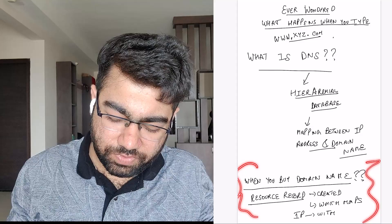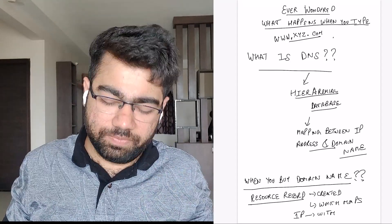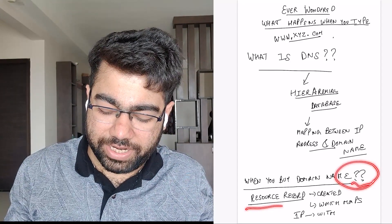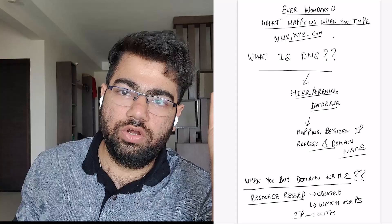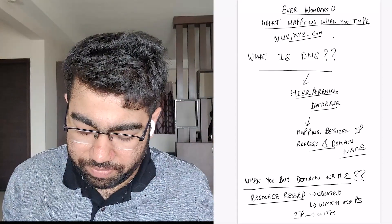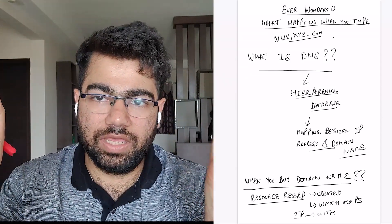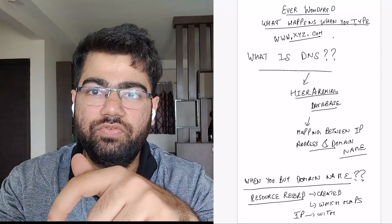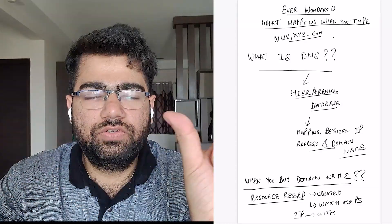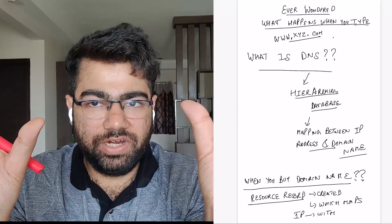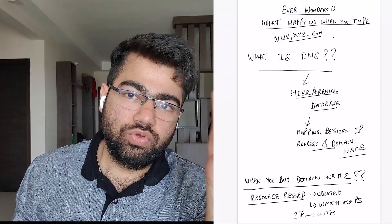Let's start with the first process. Suppose you are building a website — you would need a domain name so that everybody can reach it. You buy this domain name from a registrar like GoDaddy. When you buy this domain name, it creates a resource record. A resource record is basically the mapping between the IP address and the domain name. You configure your servers and map that IP address to the domain name, and then a resource record is created.